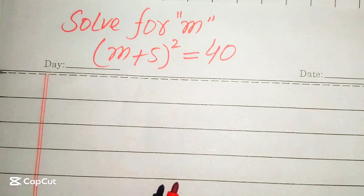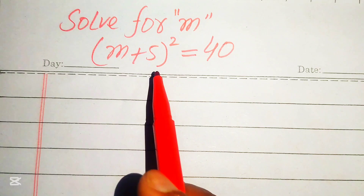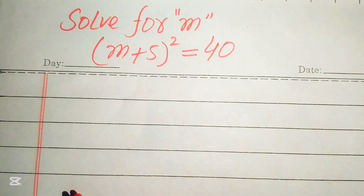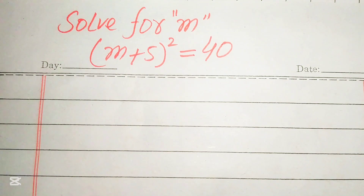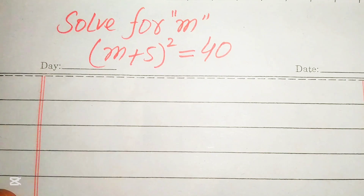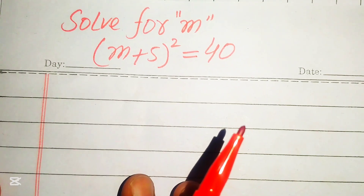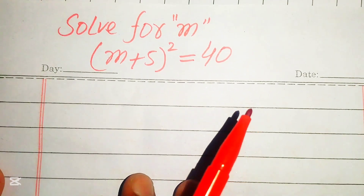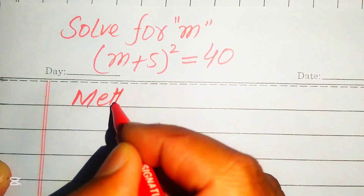Hello everyone, welcome. We will solve this nice algebra problem: (m + 5)² = 40, and we will solve for the values of m. We can solve this problem with two methods. If you have any other method in mind, please write it in the comment section, and I will appreciate your effort.